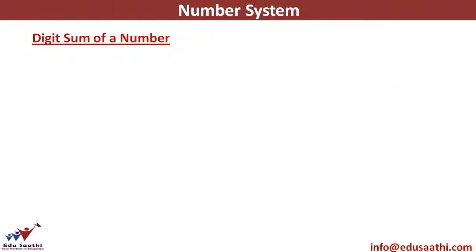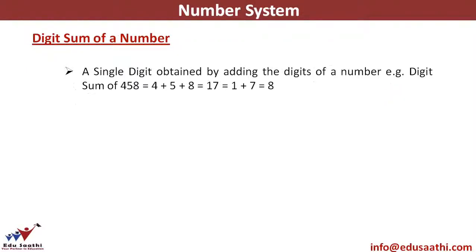Digit sum of a number represents a single digit obtained by adding the digits of a number. So if I give you a number which is 458, what I will do is I'll add up all the digits.